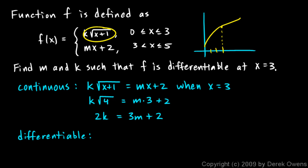So I'll write that. I'll say the derivative of this, which just means the slope of this piece, the derivative of this has to equal the derivative of that when x equals 3. So let's write it exactly like that. The derivative of k times the square root of x plus 1 has to equal the derivative of mx plus 2 when x equals 3.